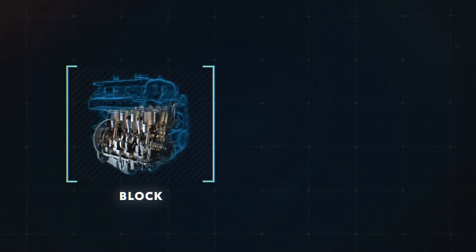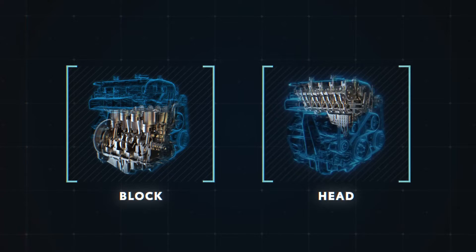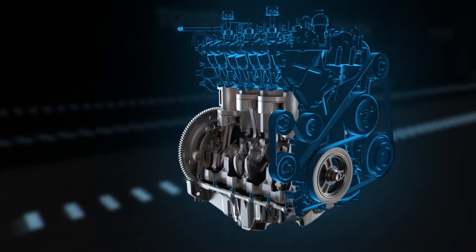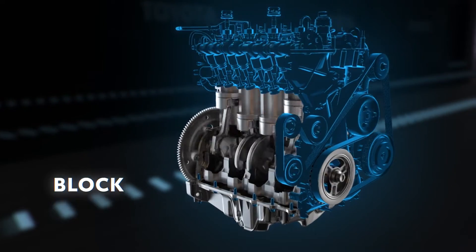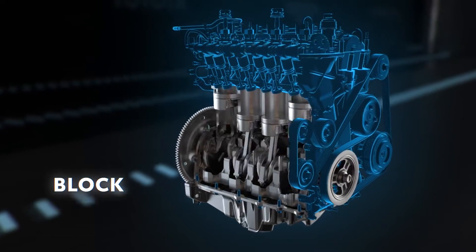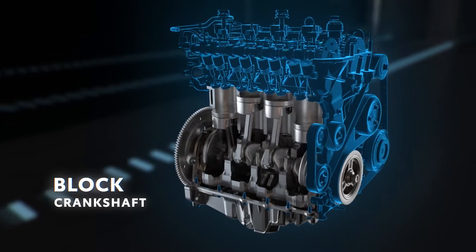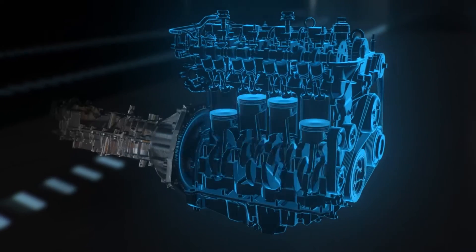Before getting deeper into this process, let's first touch on the two main parts of an engine. On the bottom, a lower block is home to the pistons, cylinders, and crankshaft, the latter of which sends the engine's power out to the transmission and wheels.